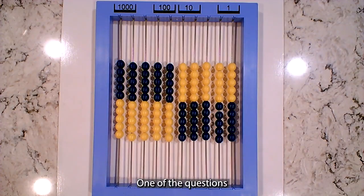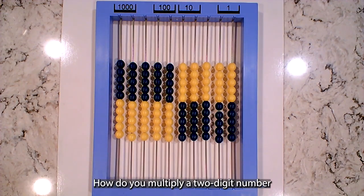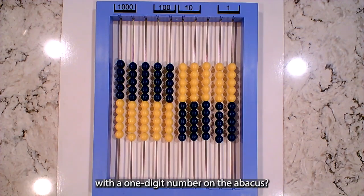Hi everybody! One of the questions that Right Start Math gets fairly regularly is how do you multiply a two-digit number with a one-digit number on the abacus?